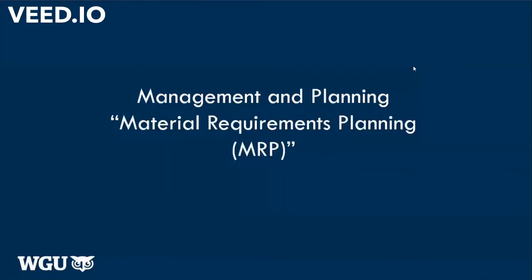Last time we spoke about enterprise resource planning software systems, or ERP. In our discussion, we broke down enterprise resource planning: enterprise is the business, the company, the organization. The resource section refers to a company's resources — its materials and its capacity. And the planning piece has to do with managing those resources.